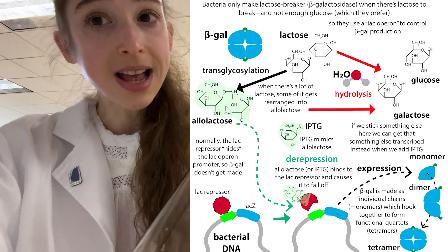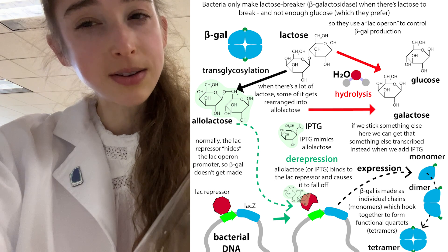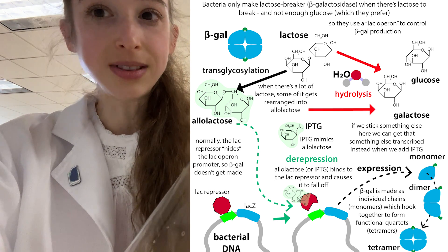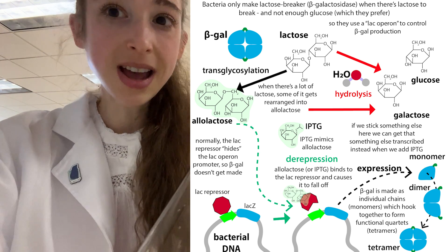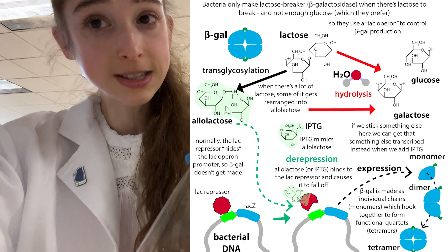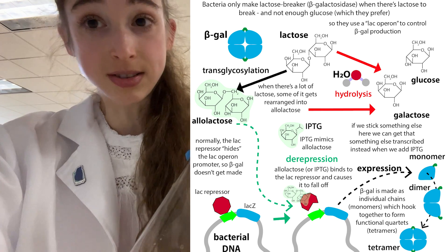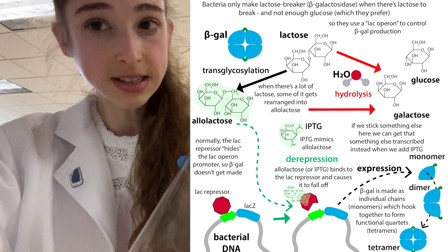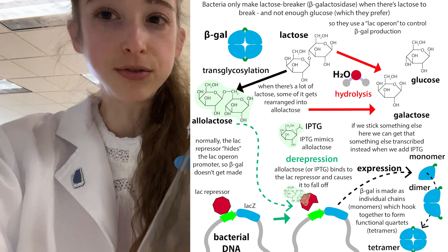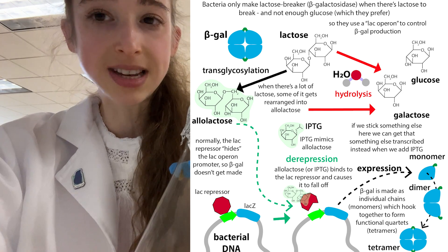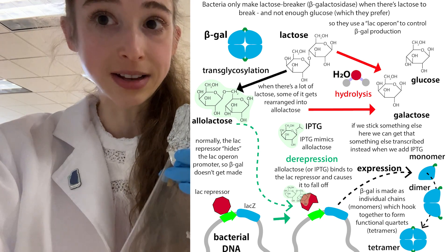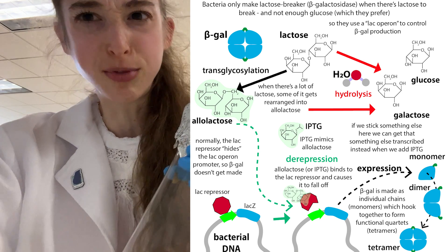They only make lactose-processing enzymes when there's not much glucose and when there's lactose present - because why make the machinery for breaking down lactose if there's no lactose around? But when there is lactose around and they don't have glucose, they're going to start breaking down lactose, and they've got to make all those enzymes. They have a way to know if there's lactose present: the lac operon, which is basically a set of genes that work together to make all the stuff you need for lactose breakdown.